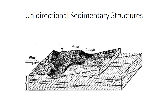In the previous lectures, you've learned how the flow conditions and the sediment grain size influence the formation of specific bed forms like ripples or dunes that form in unidirectional flow. These slides will focus on the sedimentary structures that are produced by the migration of those bed forms — the structures you can actually observe in the sedimentary rock record, which we'll use in class and on field trips to distinguish between different depositional environments.